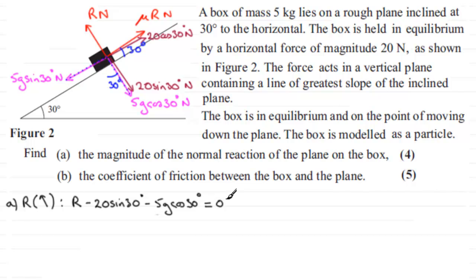So what we need to do now is just rearrange this to make r the subject. And we can do that by adding these two terms to both sides. So therefore we end up with r equaling 20 sine of 30 degrees plus 5g times the cosine of 30 degrees. And if we work this out on our calculator, you should find that you end up with 52.435 and so on. And if we round this to say three significant figures, that's going to be 52.4 Newtons, given to three significant figures.